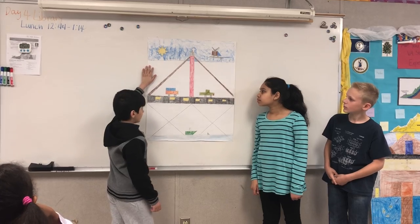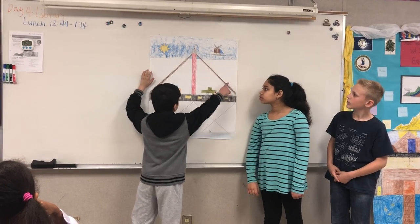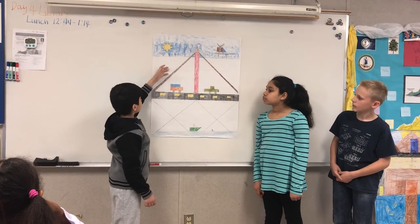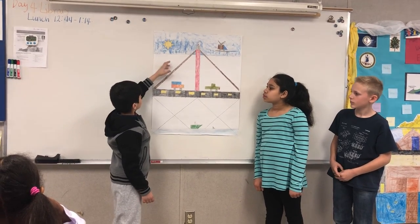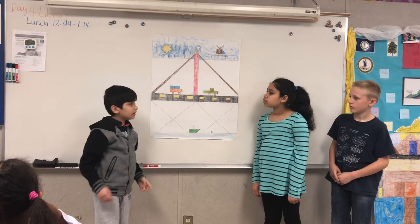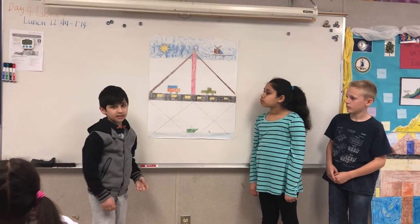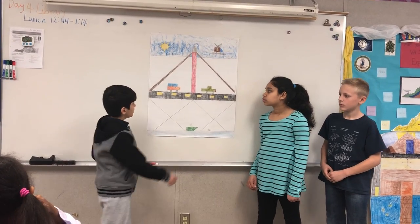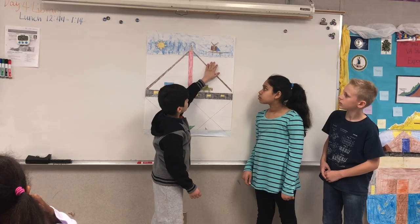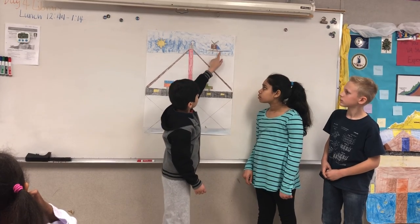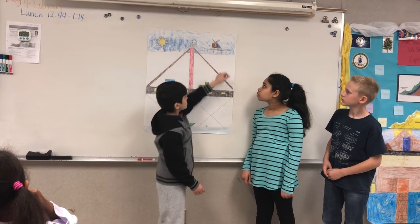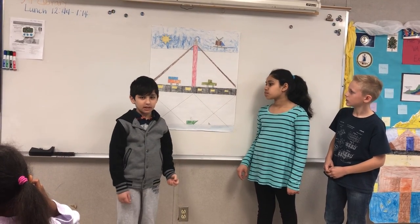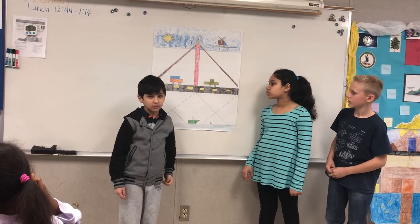Now we're going to move on to the sky. We have a line segment, and over here we have the sun — it's an octagon with four sets of angles. Over here we have the helicopter, which is made out of sets of parallel lines and angles.